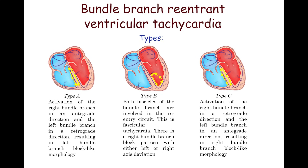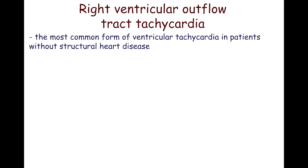In Type B, both fascicles of the bundle branch are involved in the reentry circuit — this is fascicular tachycardia — with a right bundle branch block pattern and either left or right axis deviation. Type C is characterized by activation of the right bundle branch in a retrograde direction and the left bundle branch in an antigrade direction, resulting in a right bundle branch block-like morphology.